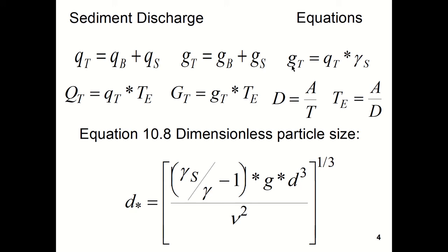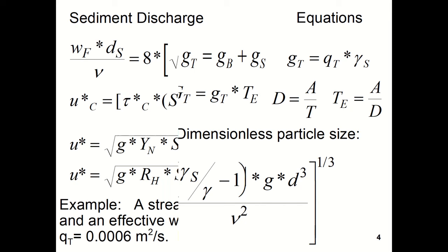The total dry weight of sediment would be equal to the volumetric dry weight of sediment times the specific weight of the sediment. And then you can see the other equations here we will use in this example. Equation 10.8 for the dimensionless particle size we have used previously.